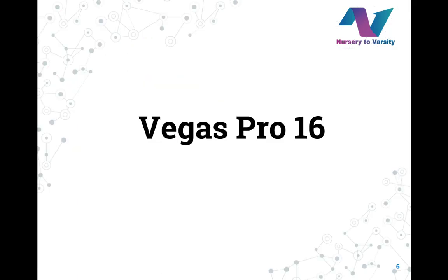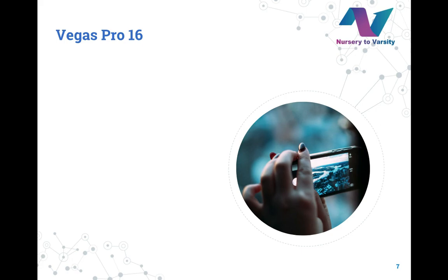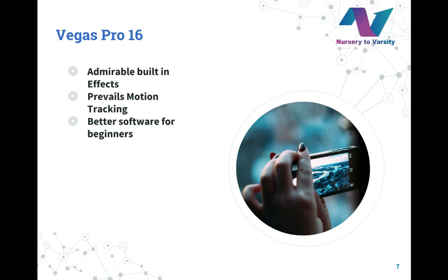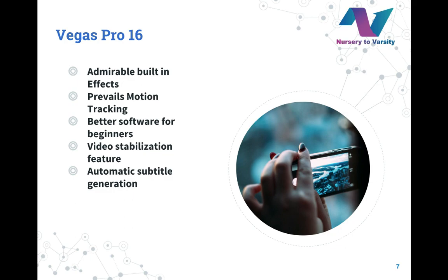Now moving on to our third software which is Vegas Pro 16. This software comes in 3 versions: Vegas Pro Edit, Vegas Pro, and Vegas Pro Suite. This software enables built-in effects and allows the user to avail various features and templates for editing. It also provides motion tracking, which generally refers to tracking the movement of an object and then applying it to another object. Due to its good interface, it is always the first choice of users. In shooting, due to the continuous movement of the camera, the final video can get distorted. So Vegas Pro 16 overcomes this problem by introducing a video stabilization feature. It also automates subtitles automatically in videos, which makes it very useful and popular. It also contains a lot of formats for importing and exporting.